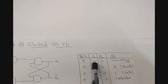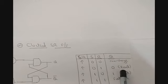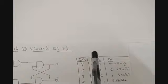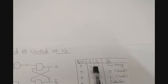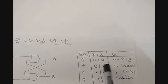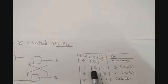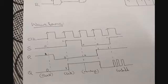The truth table for the clocked SR flip-flop: when S=0, R=0 — no change; when S=0, R=1 — reset (Q=0); when S=1, R=0 — set (Q=1); when S=1, R=1 — forbidden state. A rising edge clock is assumed here, indicated by the upward arrow mark, so output changes only occur at the rising edge.